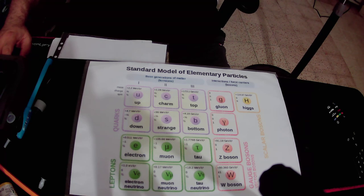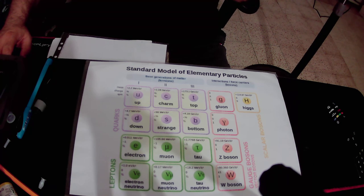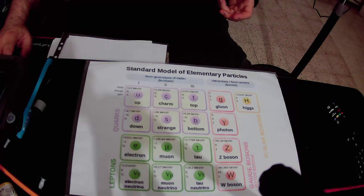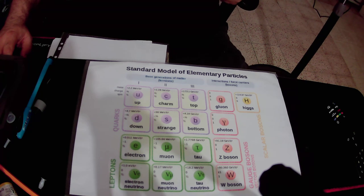The number of protons in the nucleus of the atom determines which chemical element it is. For example, oxygen has eight protons in the nucleus, while the hydrogen atom has only one proton in the nucleus.